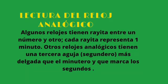Algunos relojes tienen rayitas entre un número y otro. Cada rayita representa un minuto. Otros relojes analógicos tienen una tercera aguja, llamada segundero, más delgada que el minutero y que marca los segundos.